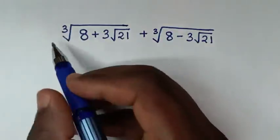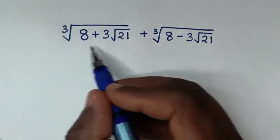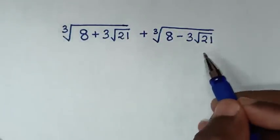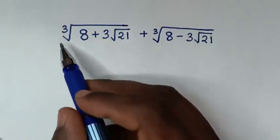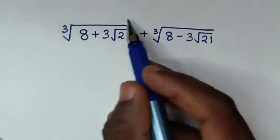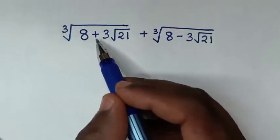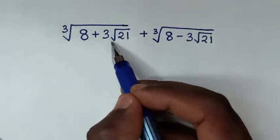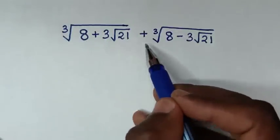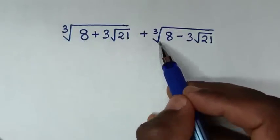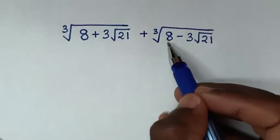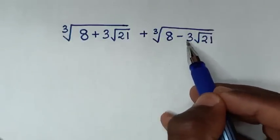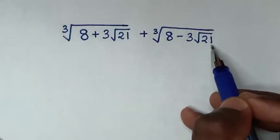Hello, you're welcome to solve this math problem by simplifying cube root of 8 plus 3 square root of 21, plus cube root of 8 minus 3 square root of 21.